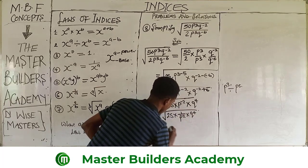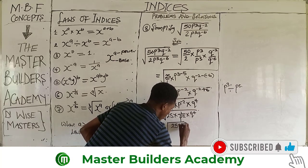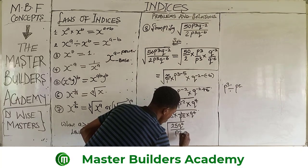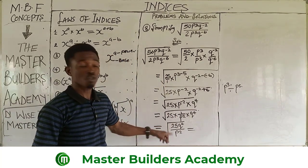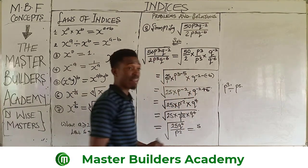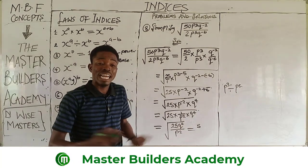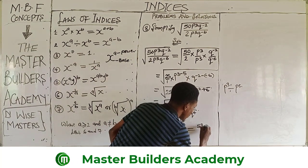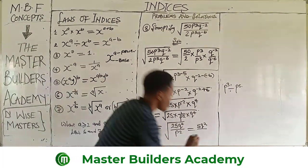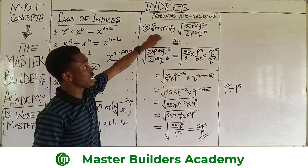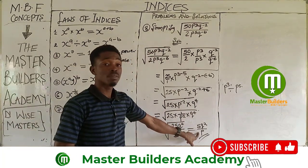This gives us the square root of 25 times q raised to power 4, all over p raised to power 2. Now we find the square root of each term individually. The square root of 25 is 5 (since 5×5=25). The square root of q raised to power 4: dividing the power 4 by 2 gives q raised to power 2. The square root of p raised to power 2: dividing the power 2 by 2 gives p raised to power 1. Therefore the final answer is 5q squared over p.